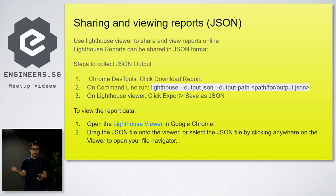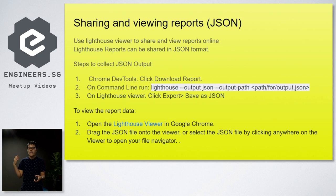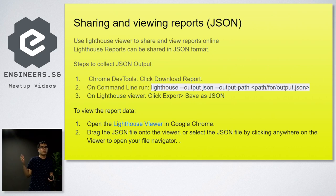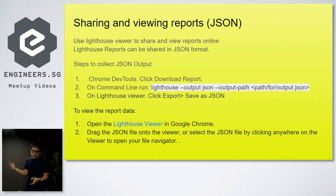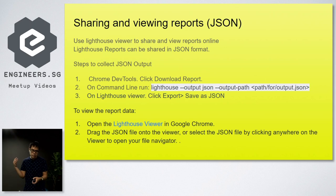How do we share and view reports using JSON? In Lighthouse, there's a viewer where we can share and view reports online. Lighthouse reports are in JSON format. To collect the JSON output, we go to Chrome DevTools and download the report. From the command line, we run lighthouse with the --output flag, setting the output to JSON and setting the output path. After setting the path, we go back to the viewer, export the file, and save it as JSON format.